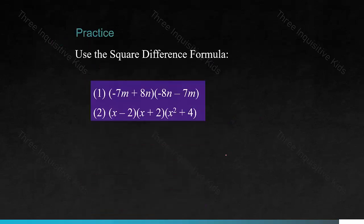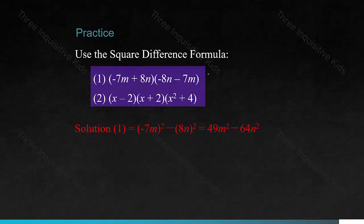Use the square difference formula to compute. For solution one, we compare to the formula a plus b times a minus b. We note that subtracting a number is the same as adding its additive inverse, so we rewrite it as adding negative 7m. Since we have negative 7m in both polynomials, a is negative 7m and b is 8n, because we have a positive 8n and a negative 8n. Plugging into the formula gives 49m squared minus 64n squared.